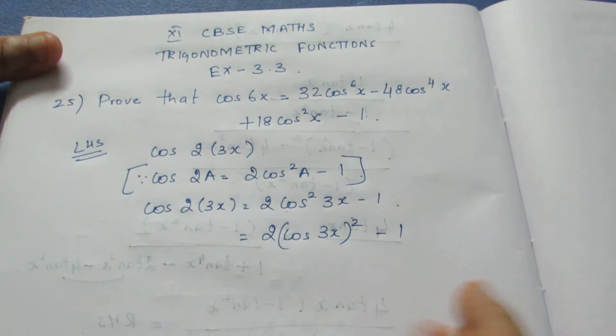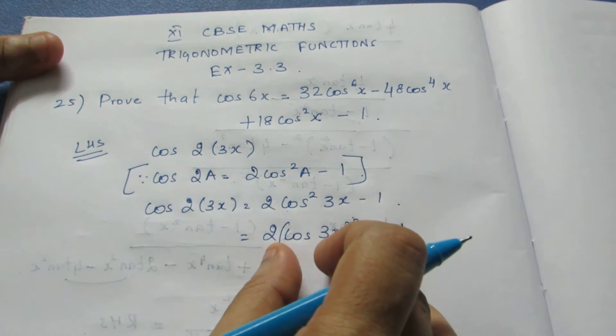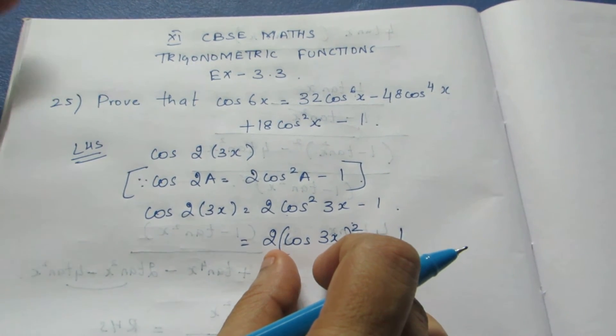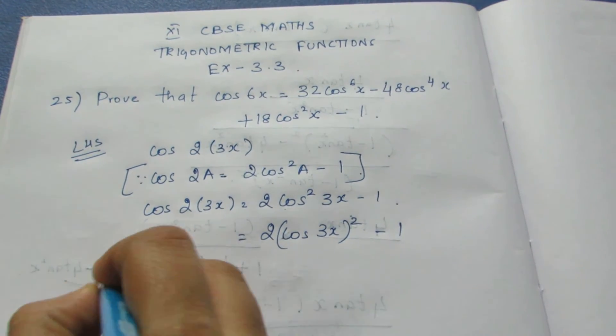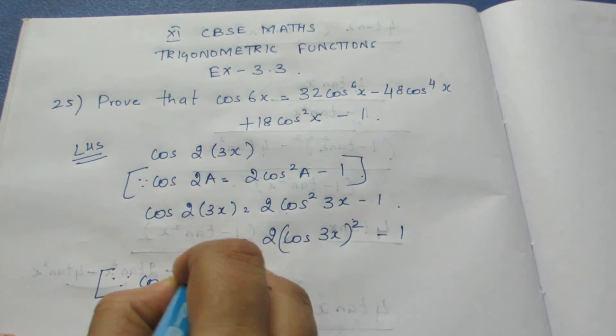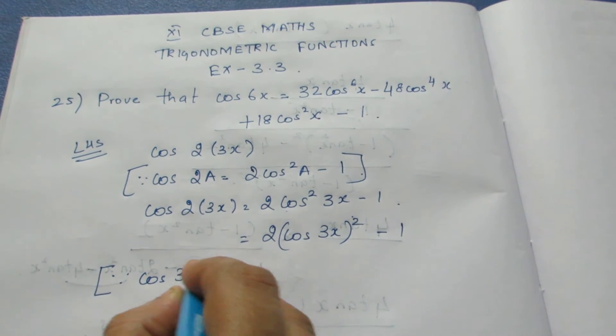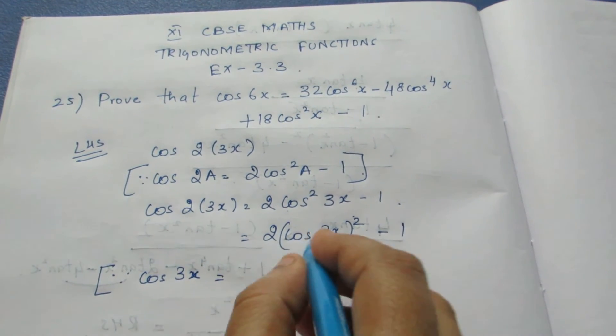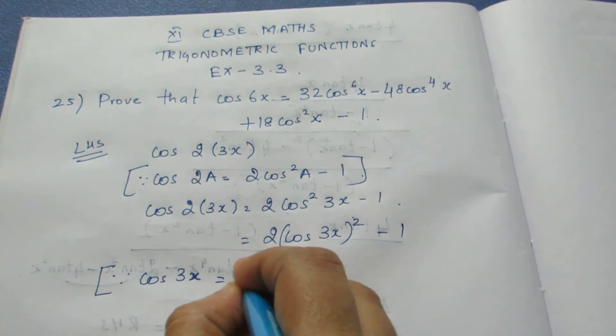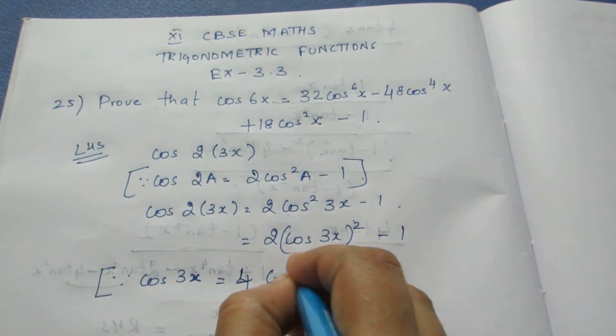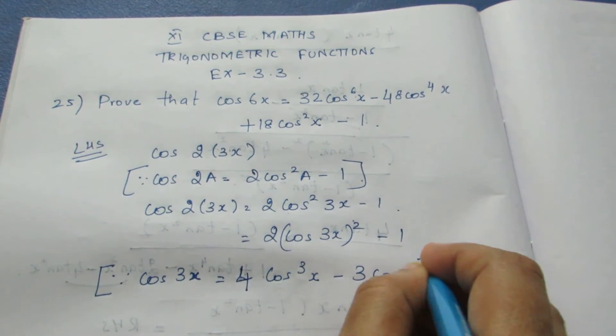Cos²3x is nothing but cos 3x—if I bring the square inside it becomes cos²3x, so there is no change. Now we have a triple angle identity formula, cos 3x. I am going to take the cos formula: 4 cos³x minus 3 cos x.